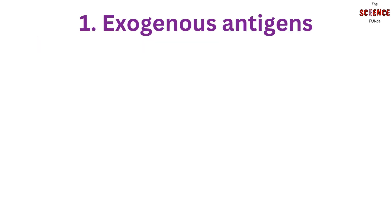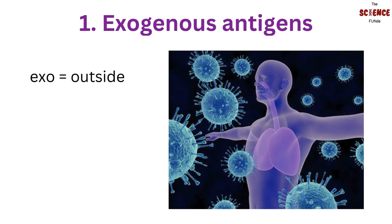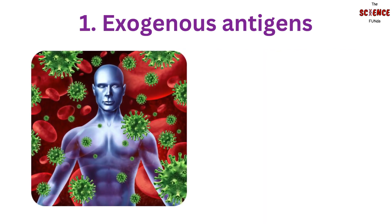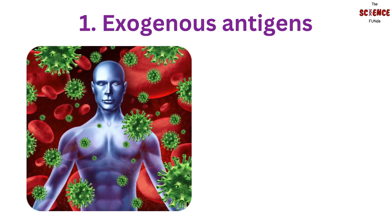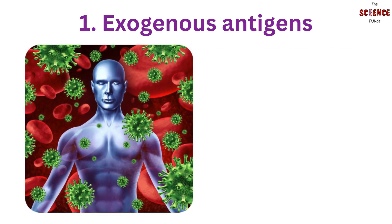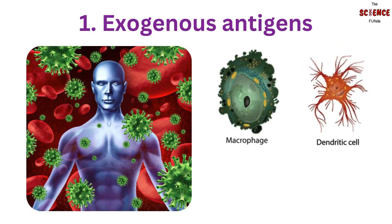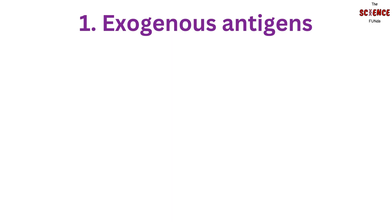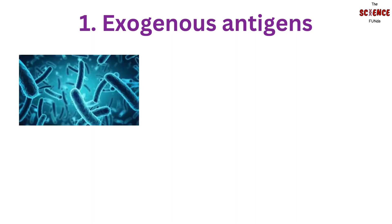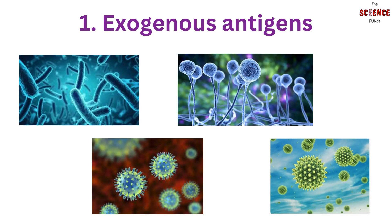The first type is exogenous antigens. The word 'exo' itself tells you that it is from outside the body. Exogenous antigens are the external antigens that enter the body from outside. They enter the body and start circulating in the body fluids and are trapped by antigen-presenting cells, or APCs, such as macrophages and dendritic cells. The uptake of these exogenous antigens by APCs is mainly mediated by phagocytosis. Examples of exogenous antigens are bacteria, viruses, fungi, and pollen.